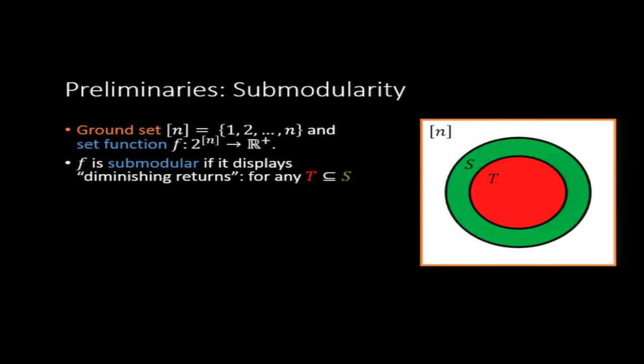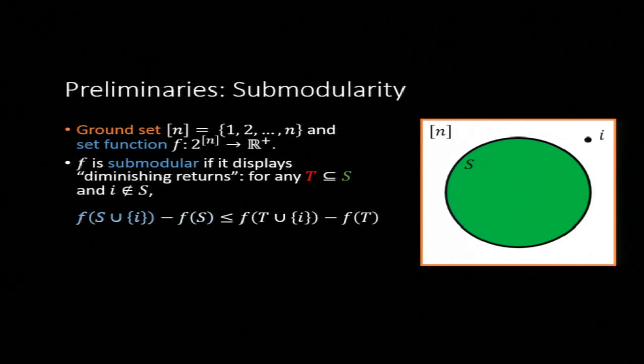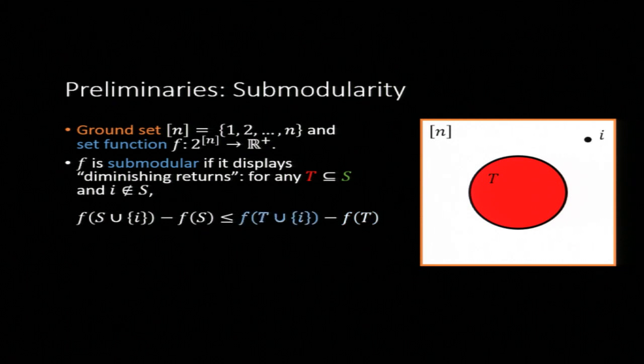So what is this property? The technical definition is that if we look at two sets in this space, T which is a subset of S, and we look at an element that's not in either of these two sets, then we can think about what happens as we add i to each of these sets. So what this says is if we take the larger set S and add i to it, that's not as good as if we take the smaller set and then we add i to that. Diminishing returns - it's not as good when we're adding to the larger set.